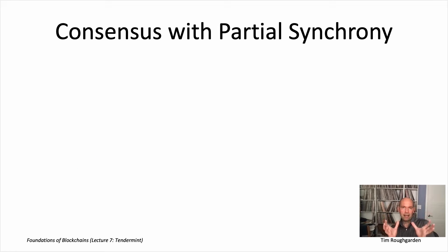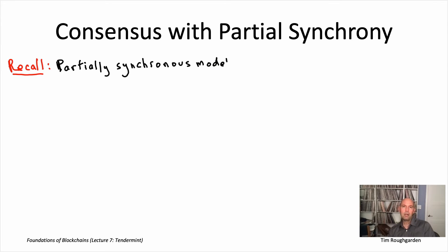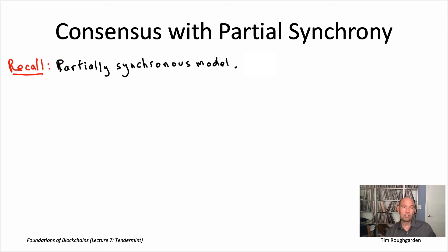Let me remind you of the context. The basic model we're working in to analyze consensus protocols is the partially synchronous model. Partial synchrony is a sweet spot between the synchronous model we studied in Lectures 2 and 3, and the asynchronous model we studied in Lectures 4 and 5.